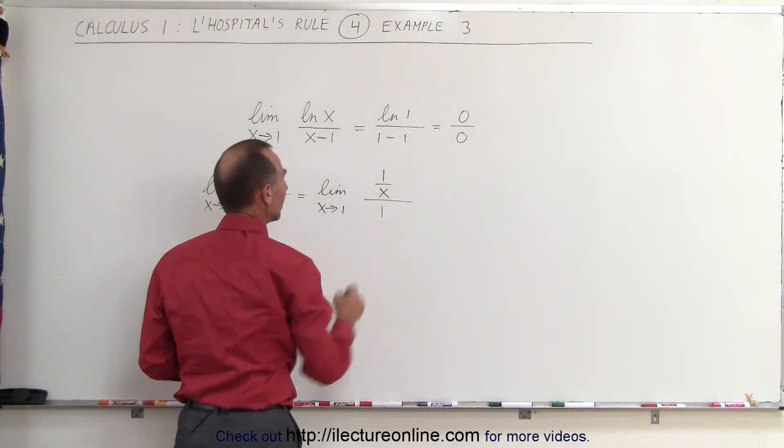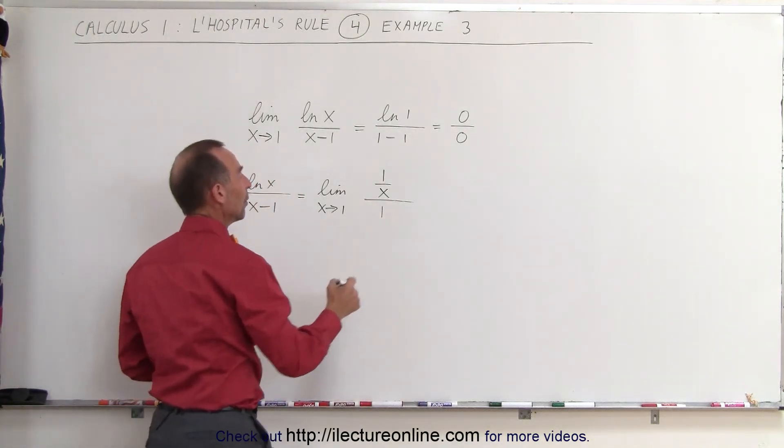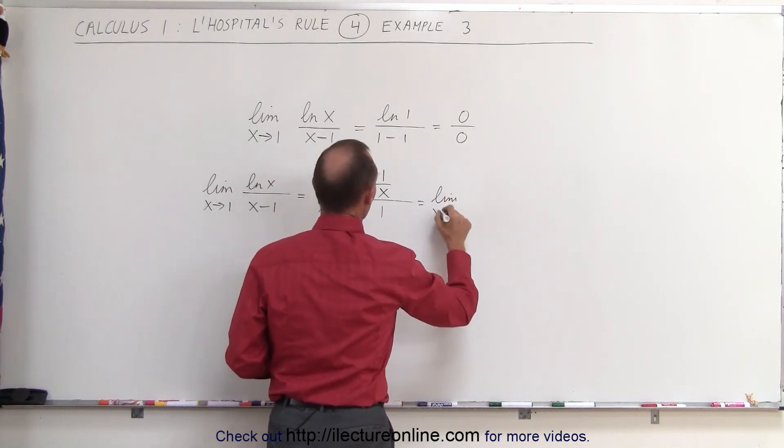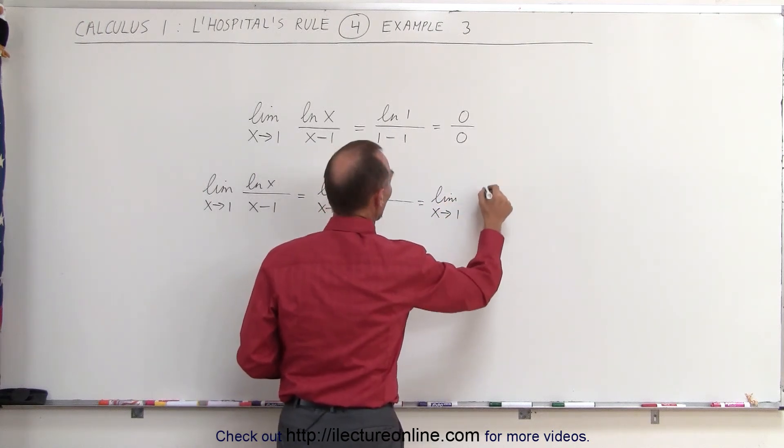1 over x divided by 1, that means the limit as x approaches 1 of 1 over x.